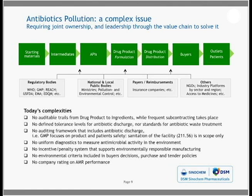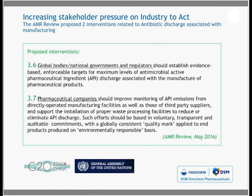As Johan also mentioned, the AMR review in its May 2016 publication came up with recommendations impacting the manufacturing of antibiotics: evidence-based antibiotic discharge levels to be defined; manufacturing standards to be introduced to make antibiotics responsibly; increased transparency in the value chain, for instance through a quality mark or industry label; and environmental criteria to be included in sourcing policies. These recommendations were presented to the G20 and to the United Nations General Assembly on AMR, held in September in New York.